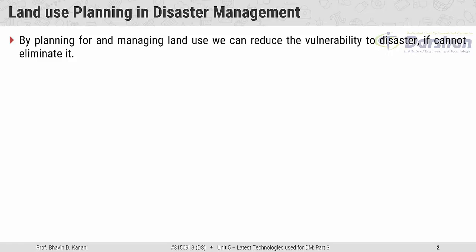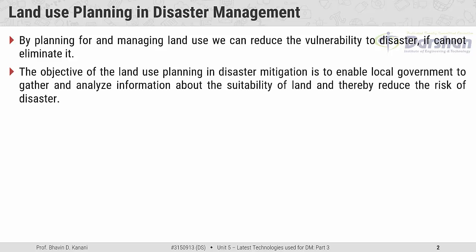This means that disaster vulnerability, if we can't completely eliminate it, then we can reduce its effect through proper land use management. The objective of land use planning in disaster mitigation is to enable local government to gather and analyze information about the suitability of land and thereby reduce the risk of disaster.